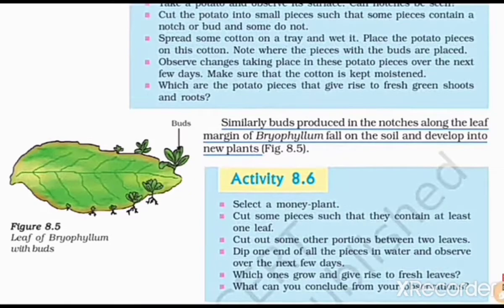Let us study about vegetative propagation — the production of a new plant with bryophyllum. Buds are produced in the notches along the leaf margin of bryophyllum. When the new plant originates, it falls off from the leaf and develops into a new plant in the soil.